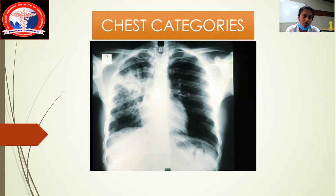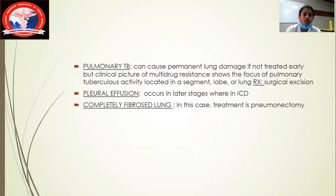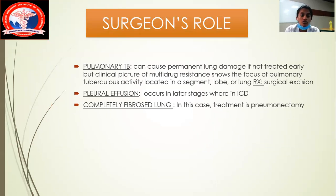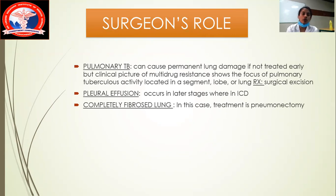Here we can see a chest radiograph showing miliary tuberculosis, which is a significant TB X-ray finding. From a surgeon's perspective, in pulmonary tuberculosis the patient can suffer permanent lung damage, potentially progressing to multi-drug resistance. The surgical role includes excision of TB activity localized to a particular segment, lobe, or zone, and ICD for pleural effusion.